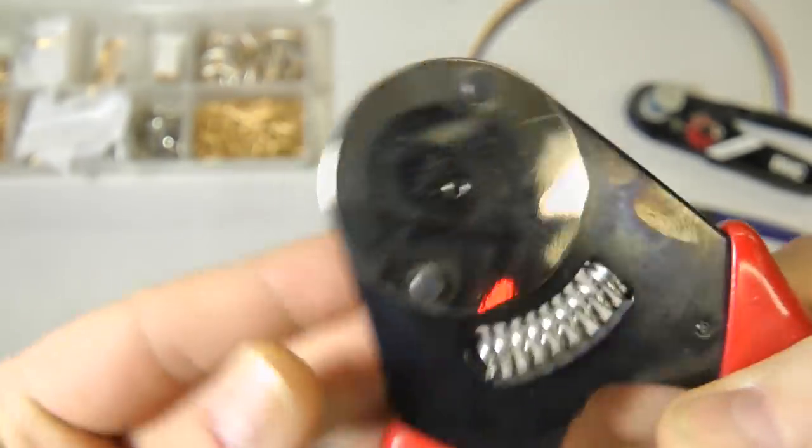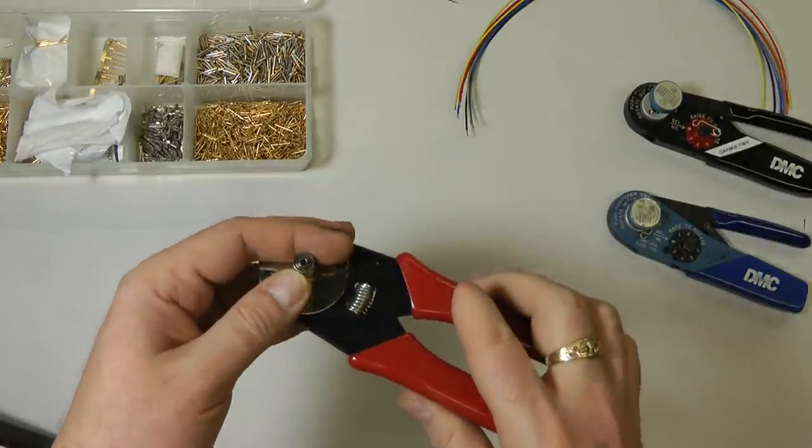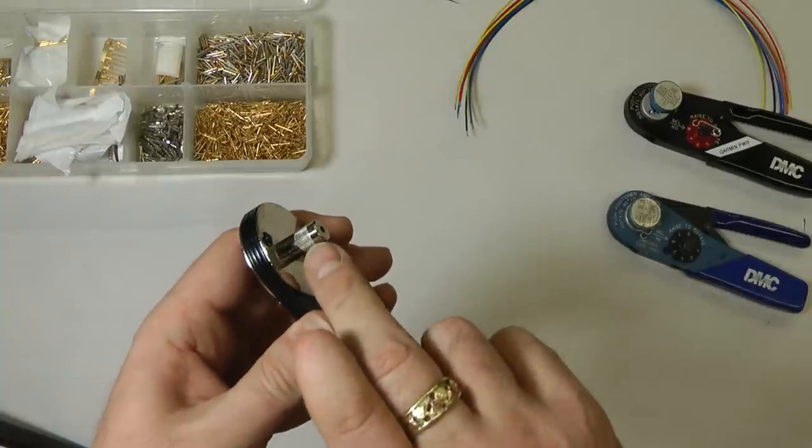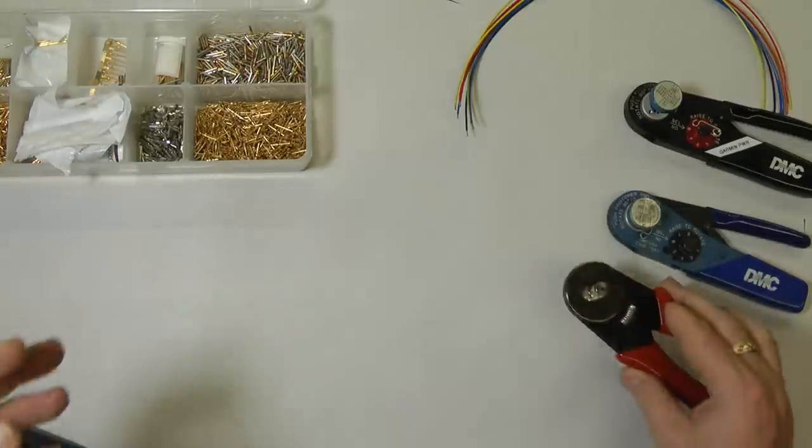You can also solder these on if you'd like. This is the import crimper we sell on our website. Works fine for 90% of what you're using. It has a replaceable positioner inside of it here, which you can use for high density or standard density terminals.